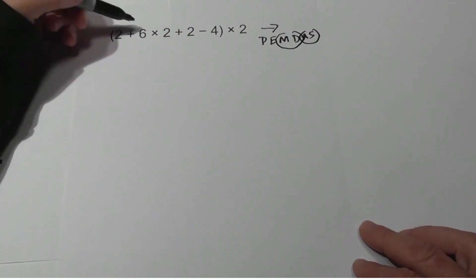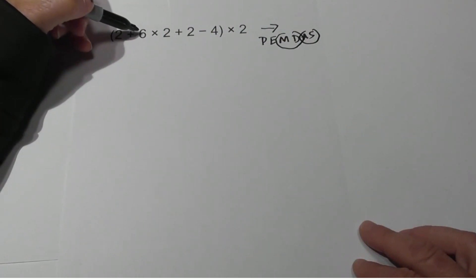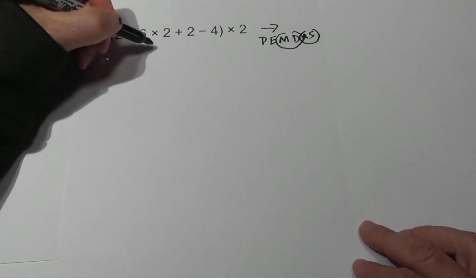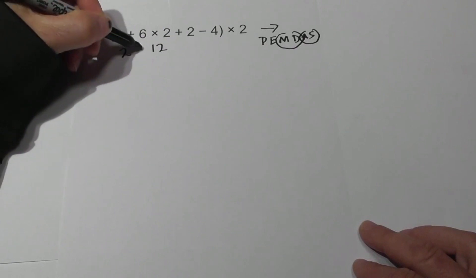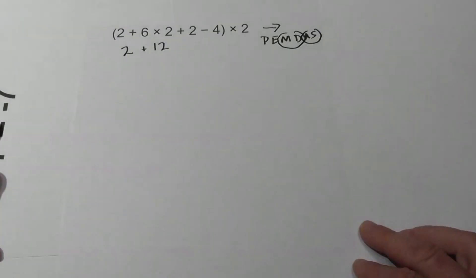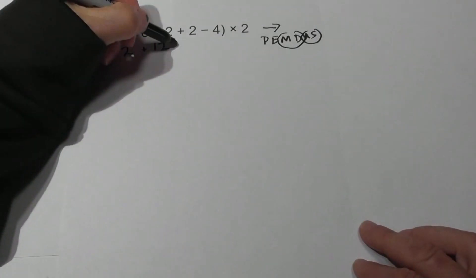To begin with, we're in the parentheses. 6 times 2 is 12. I'm going to bring down everything else and substitute the 12 for the 6 times 2.